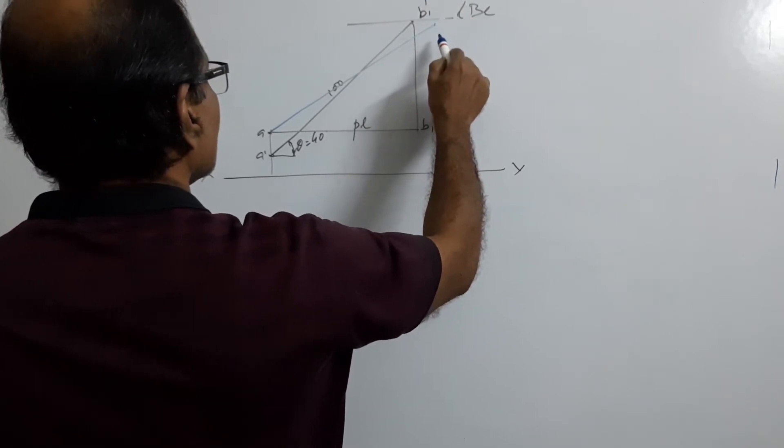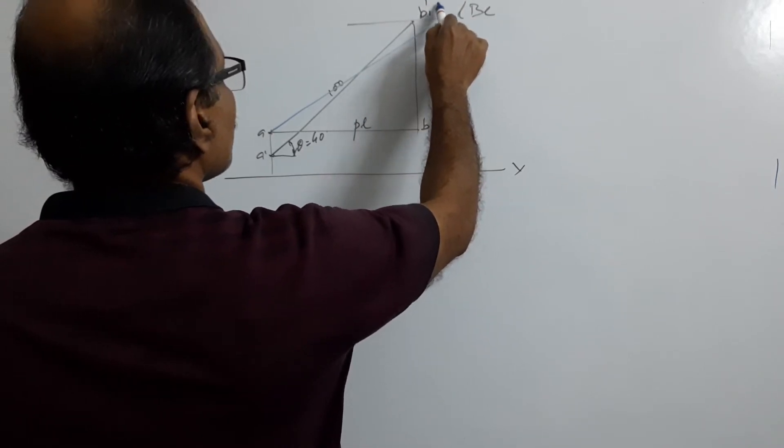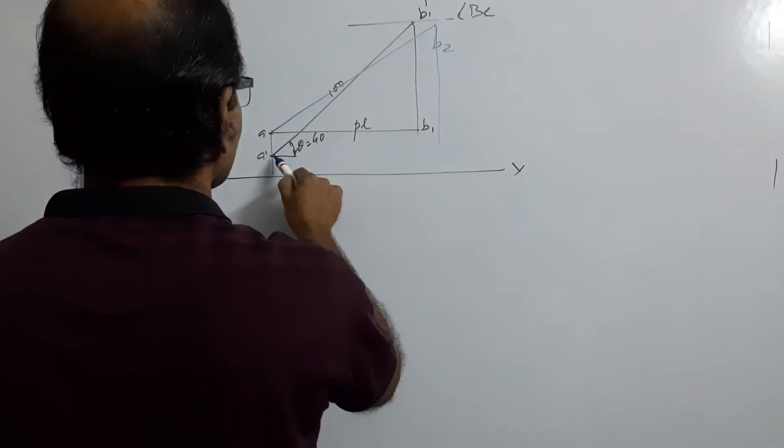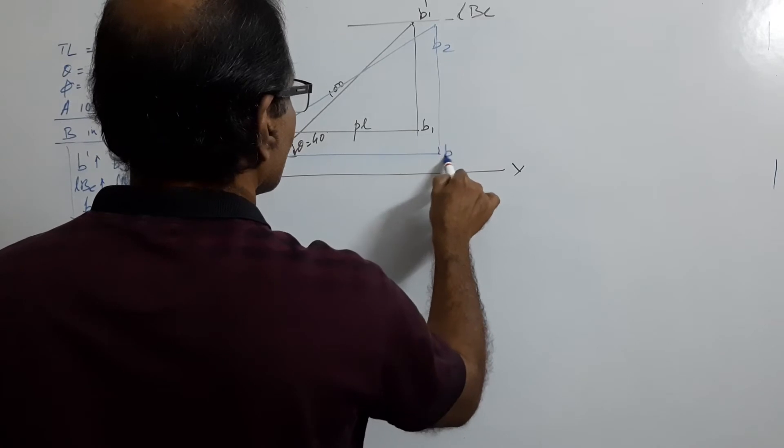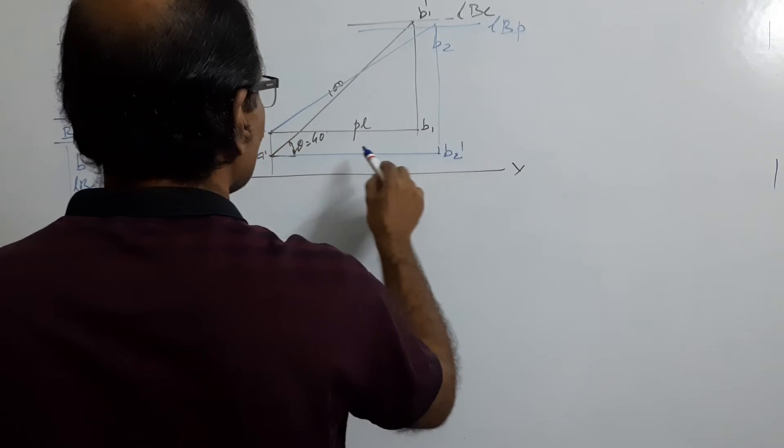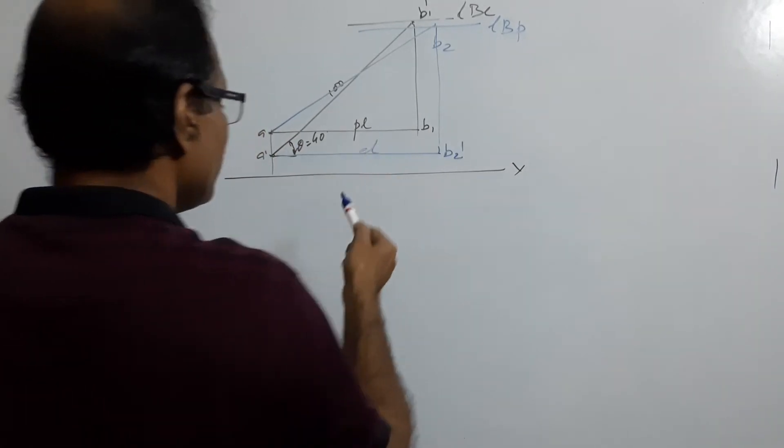It may not come up, it may come somewhere inside. This is B2. B2 dash LBP, elevation length.